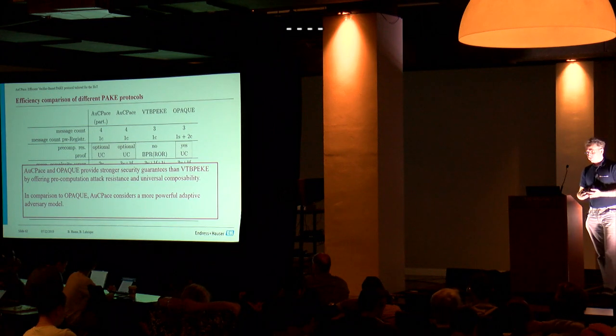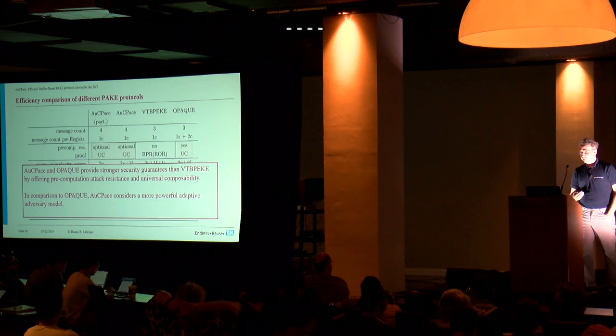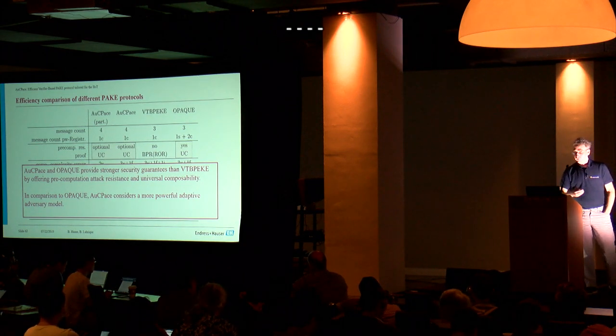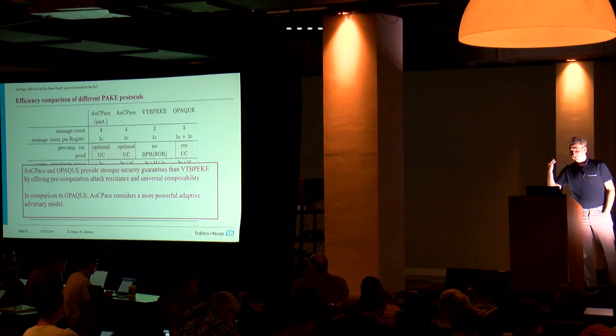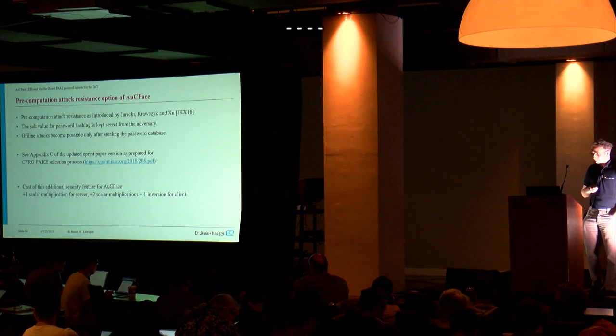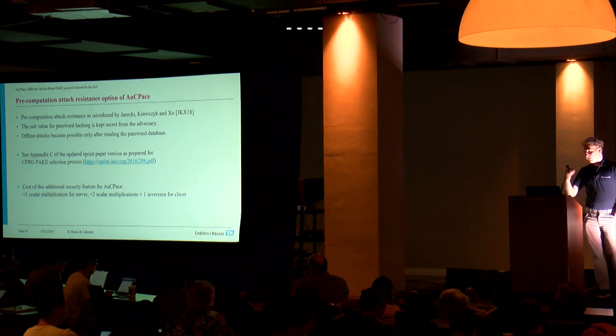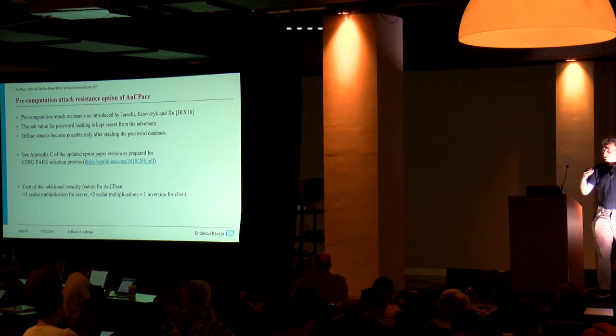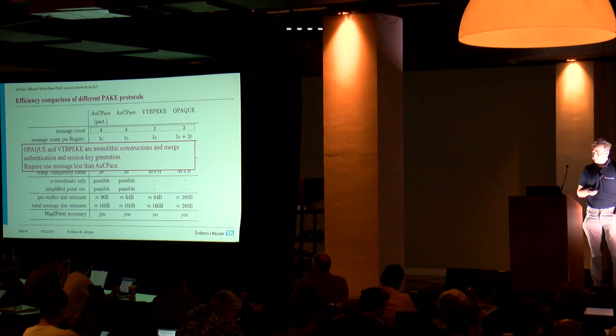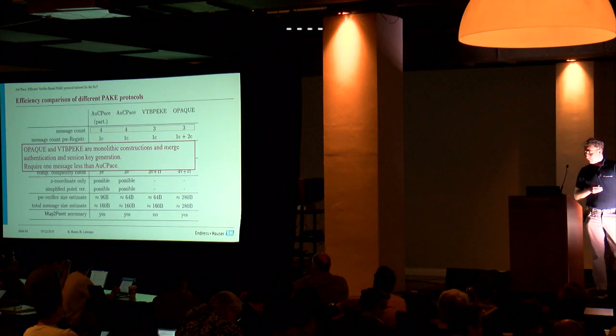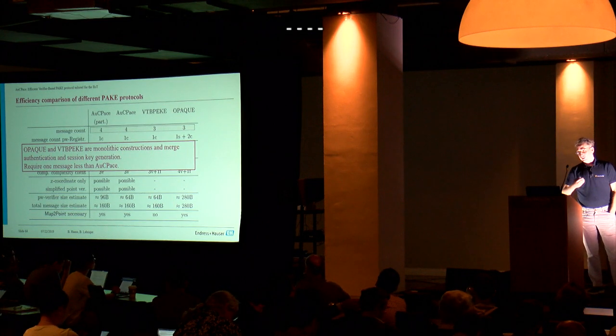This table here summarizes the results on the protocols which come with a security proof. OPAQUE and AugPACHE provide stronger security guarantees than VTBP by offering pre-computation attack resistance and universal composability. In case of OPAQUE, this is an optional feature. In comparison to OPAQUE, AugPACHE considers the more powerful adaptive adversary model. Regarding the pre-computation attack resistance of AugPACHE, it's included in the e-print version of the paper.